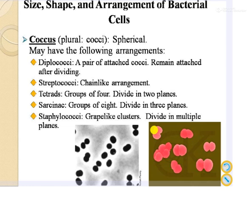Cocci are spherical-shaped bacteria and are divided into different classes based on arrangement. Diplococci: two cocci attached together. Streptococci: chain-like arrangement. Tetrads: a group of four cells arranged in two planes. Sarcinae: a group of eight cells arranged in three planes. Staphylococci: a grape-like or cluster-like arrangement.